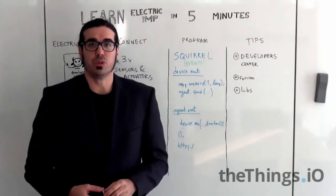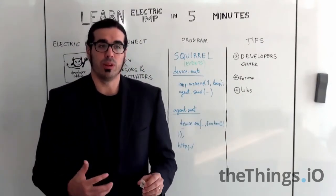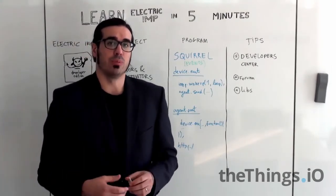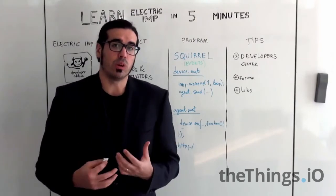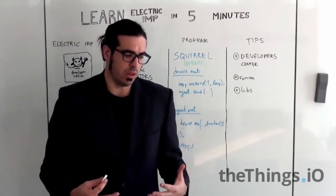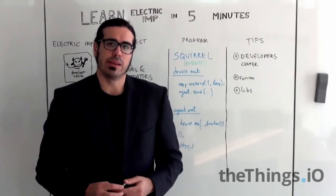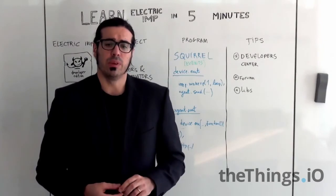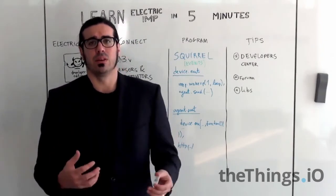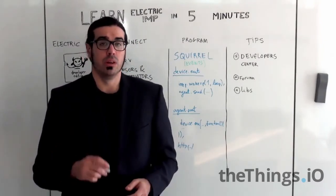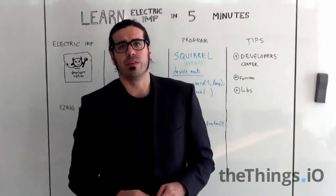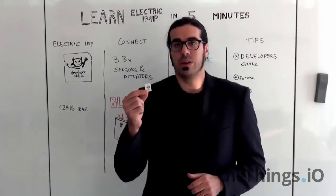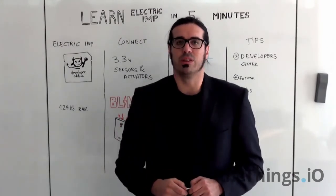And finally they are going to release very soon libraries. So if you go to the GitHub from ElectricIMP you will have some libraries there. They are not working yet but when they are going to upgrade the firmware of ElectricIMP and the developer editions I think we are going to be able to use libraries and that's going to be very helpful for developers. At theThings.io we are also developing a library for ElectricIMP.